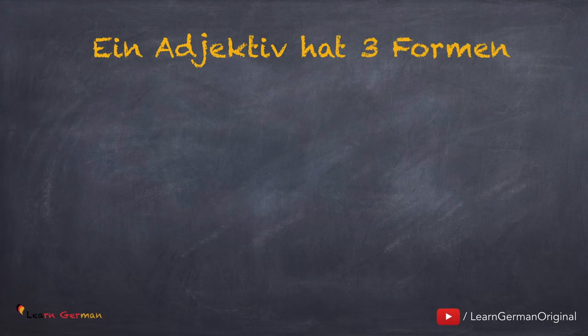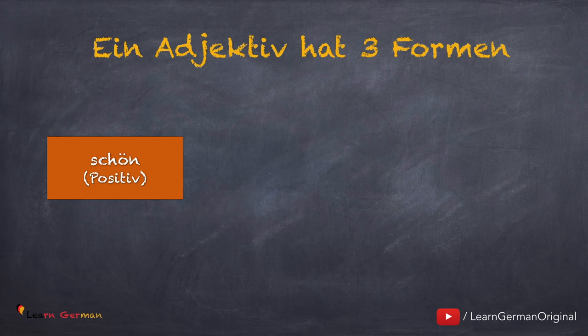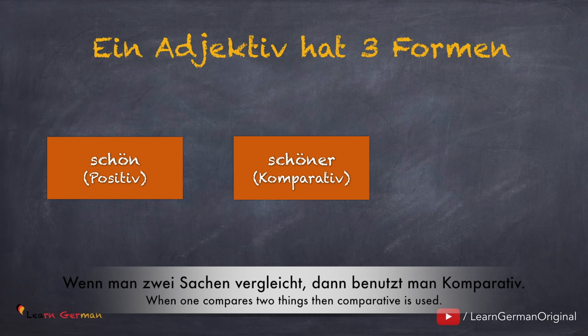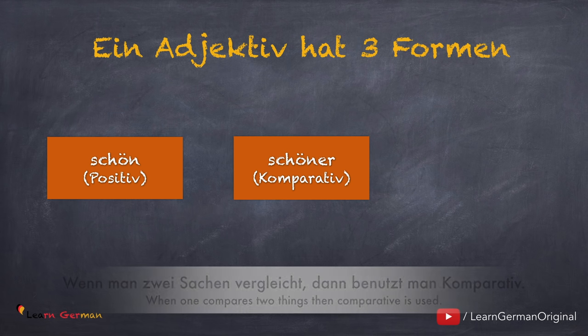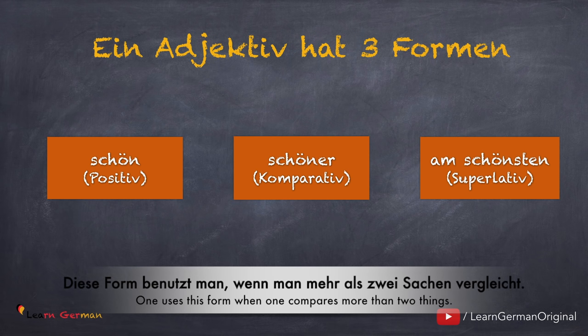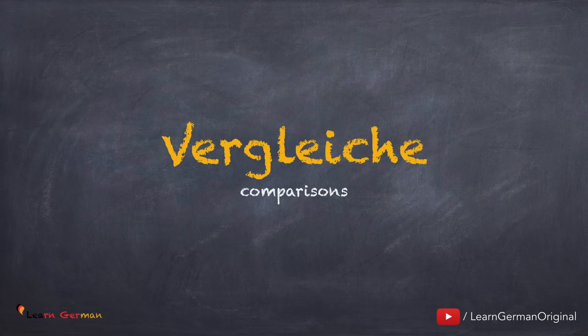Wir haben schon gelernt, dass ein Adjektiv drei Formen hat. Schön — das ist die Grundform oder Positivform von dem Adjektiv. Wenn man zwei Sachen vergleicht, dann benutzt man Komparativ: schöner. Am schönsten — das ist die Superlativform. Diese Form benutzt man, wenn man mehr als zwei Sachen vergleicht. Und jetzt lernen wir, wie macht man Vergleiche.